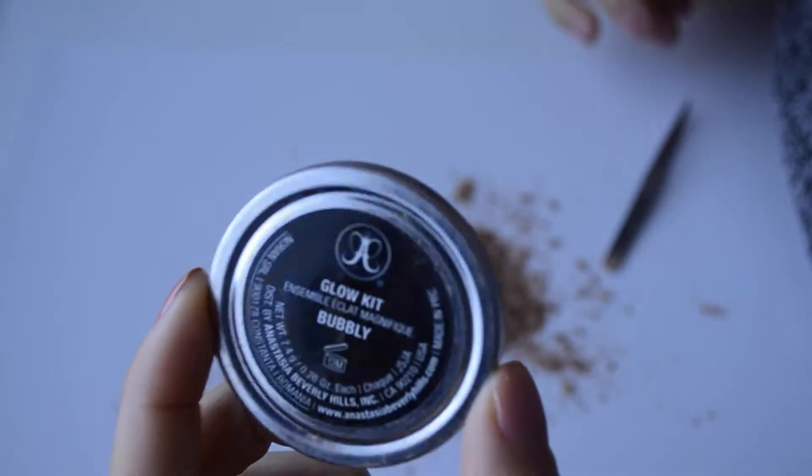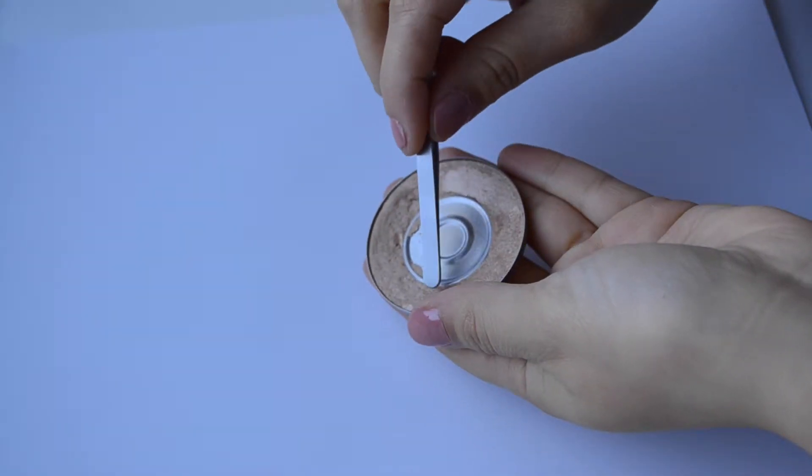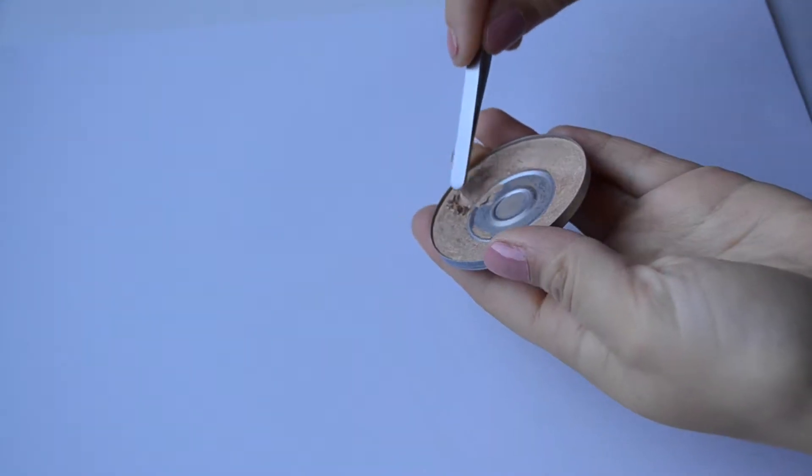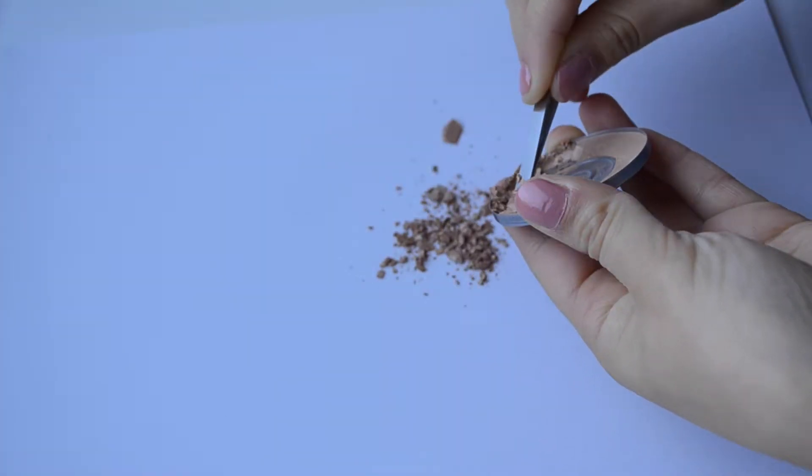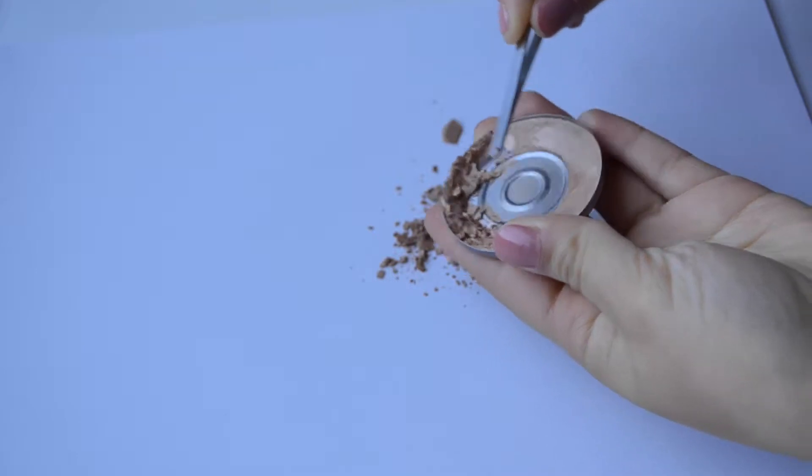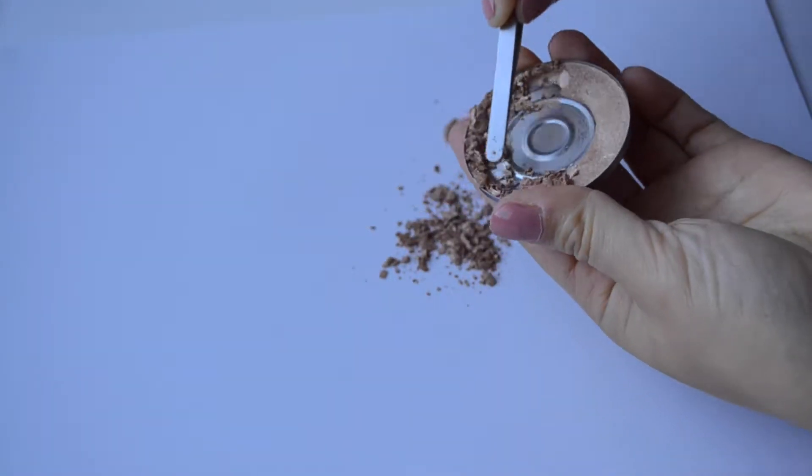I chose to mix these old highlighters from my previous Anastasia Glow Kit that I was no longer using. As you can see here, I'm going to start breaking up the product in the pan. As I'm doing this, I am dumping all the product onto the piece of paper. The piece of paper is going to serve as our funnel later on to put it back into the pan.